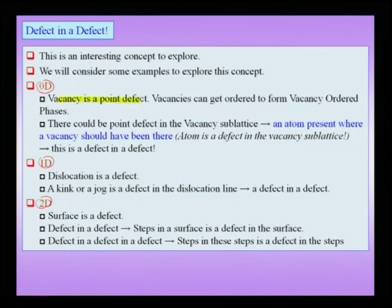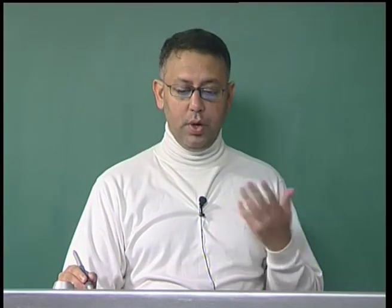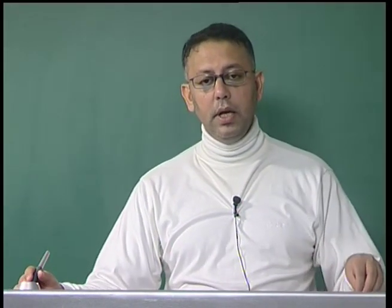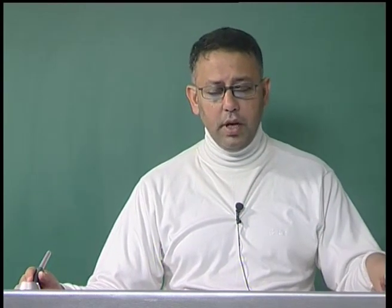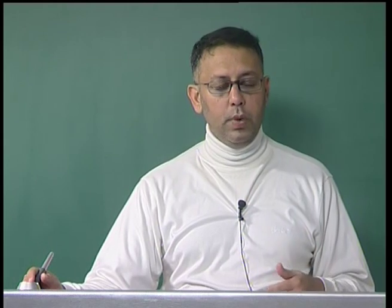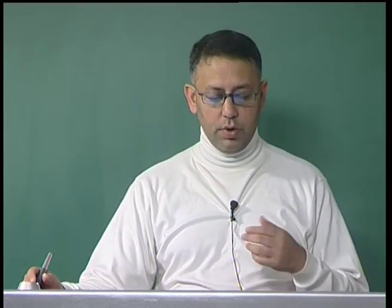We noted that a vacancy is a point defect in a crystal, and vacancies can get ordered to form vacancy-ordered phases. Once you have a sub-lattice occupied only by vacancies, there could be a scenario where an atom is present on the vacancy sub-lattice site. Since this is a vacancy sub-lattice, the presence of an atom in it is actually a defect — the defect here is an atom. So in the vacancy sub-lattice, an atom is a defect. Therefore this is the defect-in-a-defect concept: a vacancy is a defect in a material, and the atom in the vacancy sub-lattice is a defect in the vacancy-ordered sub-lattice. This is in zero dimensions.